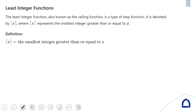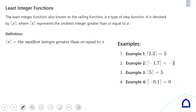The next function is the least integer function (ceiling function), written with square brackets. It gives the smallest integer greater than or equal to the value inside. For example: ⌈2.3⌉ = 3, and ⌈−1.7⌉ = −1. For an integer input you get the same value.